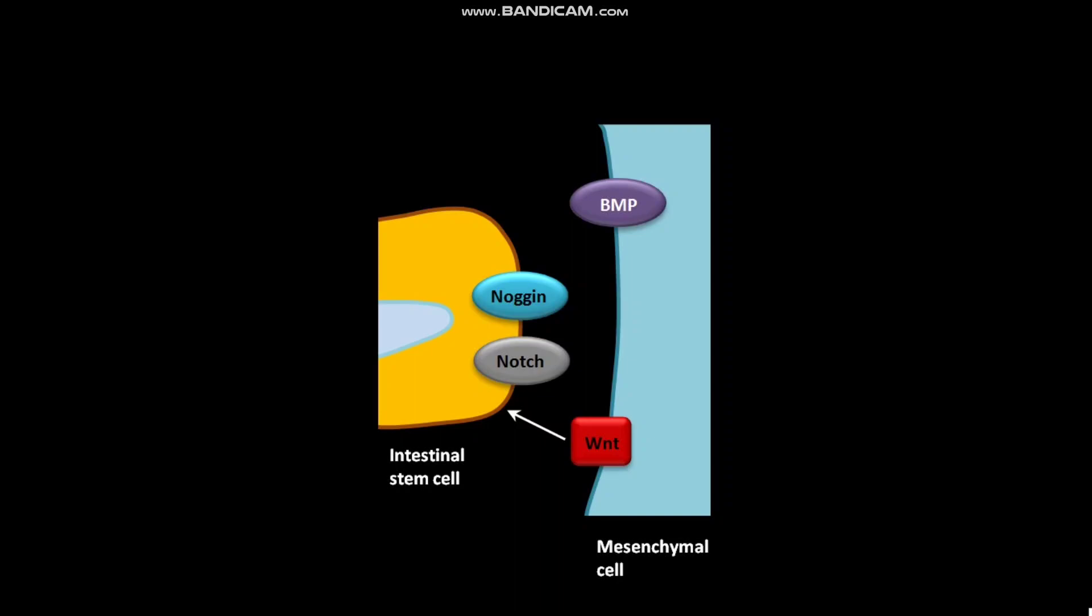BMP signals induce the intestinal stem cell for differentiation. BMP blocks the effect of WNT. Noggin on the intestinal stem cell blocks the BMP signals. Thus, Noggin promotes stem cell proliferation.